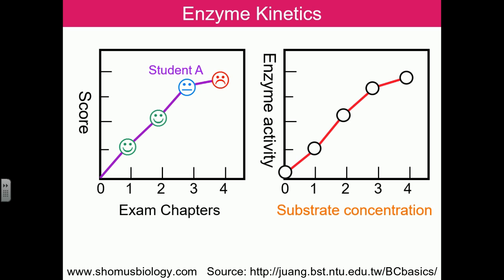When the substrate concentration is raised gradually, the enzyme performs well and activity increases quickly at the beginning. But when the substrate concentration gets a little higher, it reaches a saturation point and the enzyme is no longer able to provide better enzymatic activity beyond a specific substrate concentration.